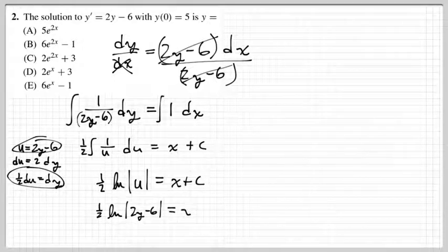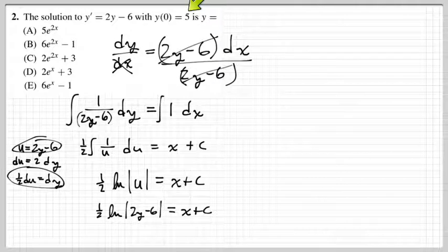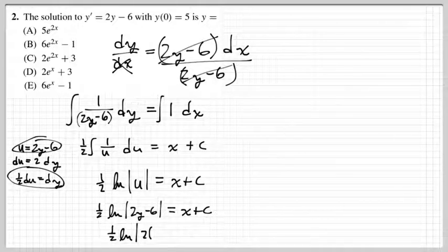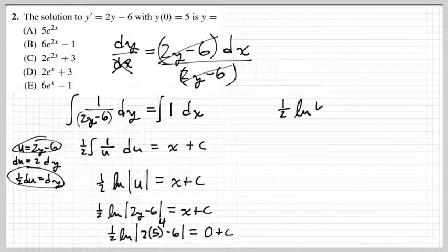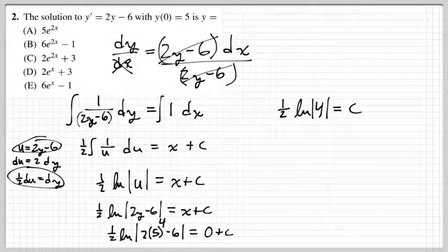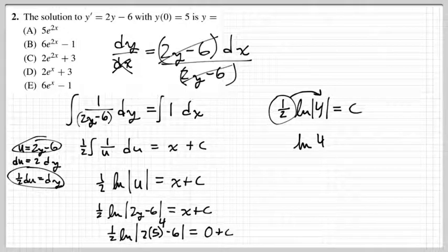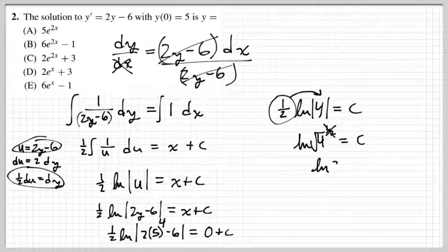Now plug in the initial condition: x = 0 and y = 5. We get (1/2) natural log of |2(5) − 6| equals 0 + C. That's (1/2) natural log of 4 equals C. Using the log power rule, we can move the coefficient 1/2 as an exponent: natural log of 4^(1/2), which is natural log of the square root of 4, so natural log of 2 equals C.